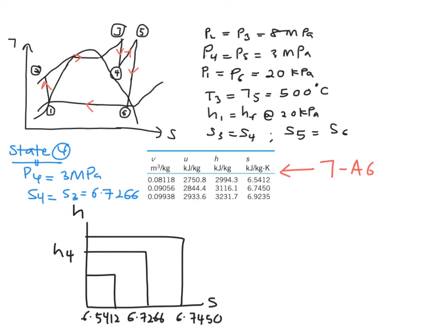So you will see that the corresponding value of H at 6.7540 is actually 3116.1, so 3116.1. And the corresponding value of S equal to 6.5412 is this one, 2994.3.